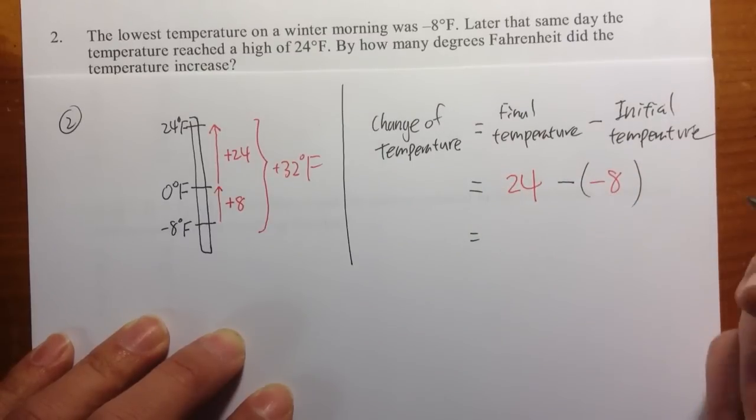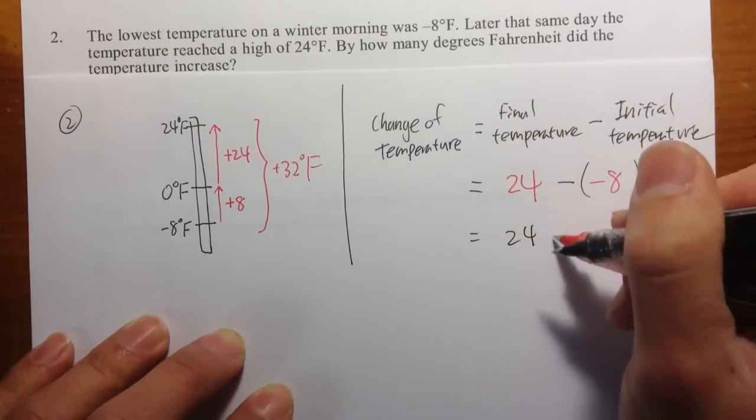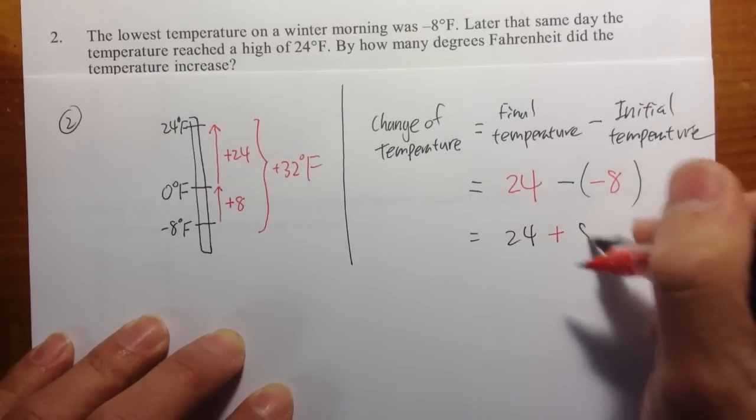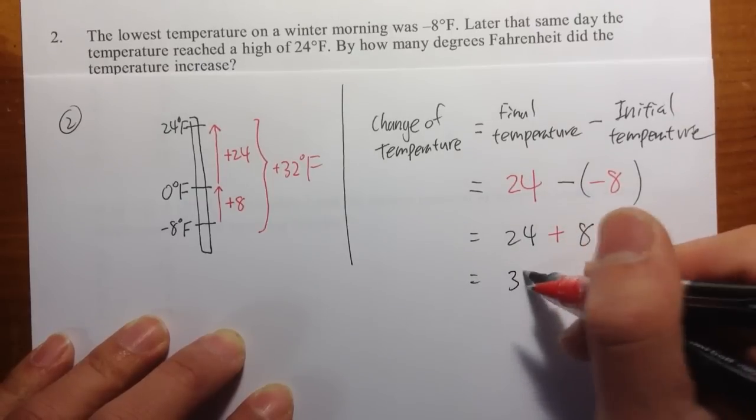So 24 minus the negative 8. Negative times the negative turns out to be a positive. So this is 24. And we actually have a plus 8. So again, we get 24 plus 8, which is 32 degrees Fahrenheit.